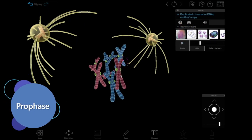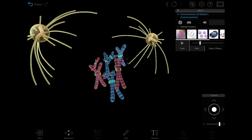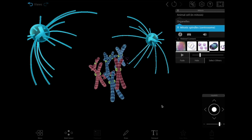During prophase, the duplicated DNA condenses into duplicated chromosomes called sister chromatids. The centrosomes move towards opposite ends of the cell.